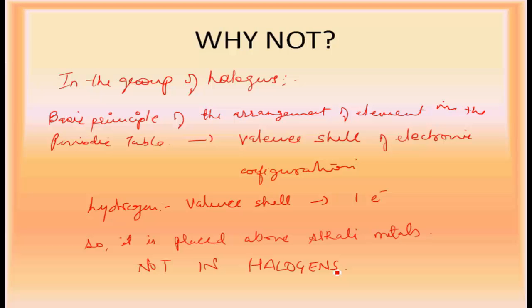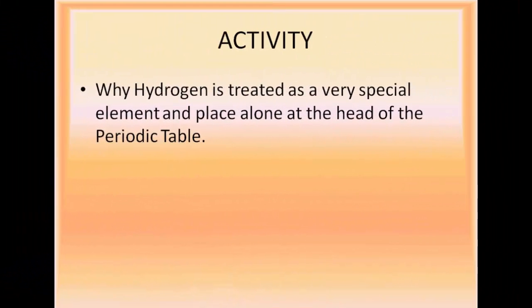So I hope you now have a good idea about why hydrogen is kept above the alkali metals even though it is a non-metal — simply because they share the same valence shell electronic configuration, having one electron in common. With this, I end my session on the positioning of hydrogen in the modern periodic table. Please answer the review questions in your notebook.